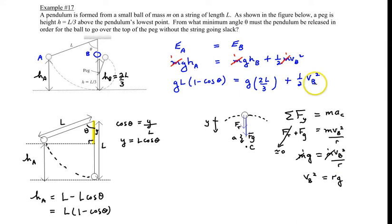Now we can substitute that into the above equation here. So we will get GL brackets one minus cosine theta equals two thirds GL and then we have one half and velocity B squared is just R times G. So you'll see that there's a G in each term. So we can cancel out the G's. And we have L brackets one minus cosine theta and then we have two thirds of L and then we have a half of R.